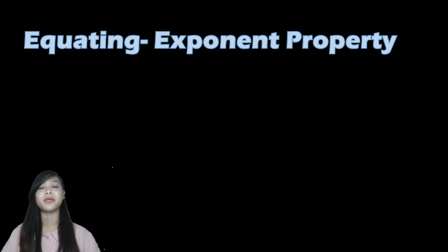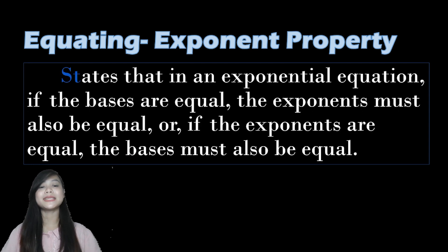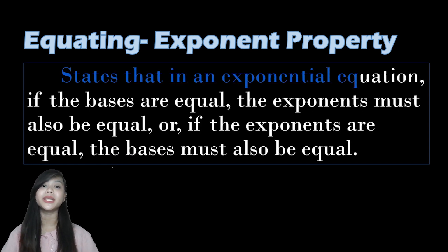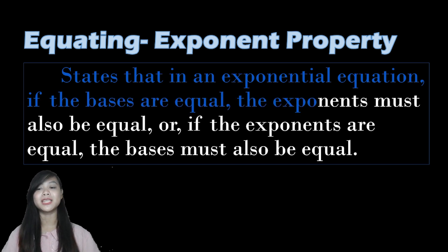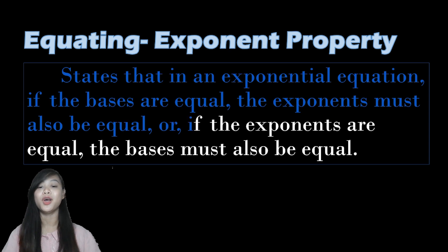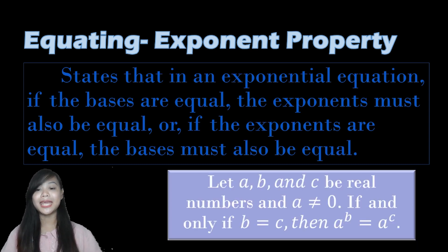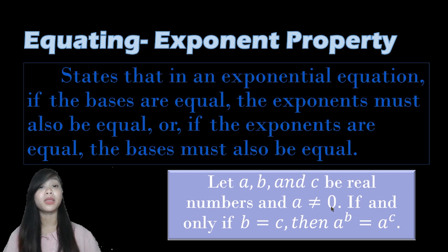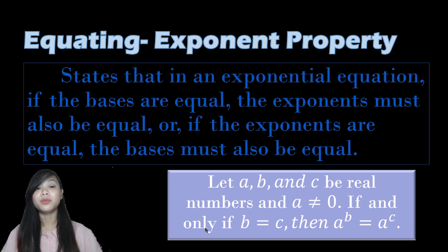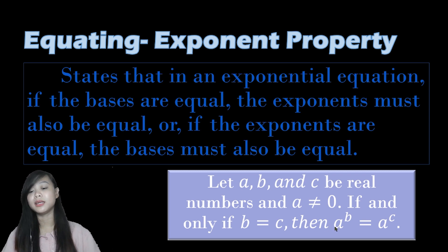First we need to consider the Equating Exponents Property. This states that in an exponential equation, if the bases are equal then the exponents must also be equal, or if the exponents are equal then the bases must also be equal. Let a, b, and c be real numbers where a should not be equal to zero, because a represents the base. So we have a raised to b and a raised to c.